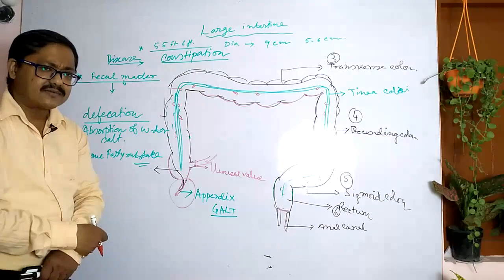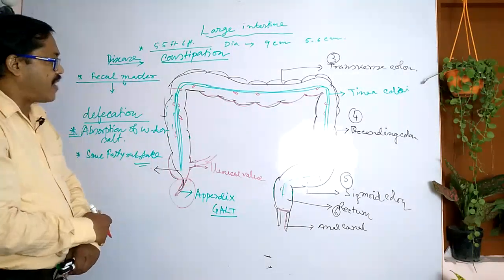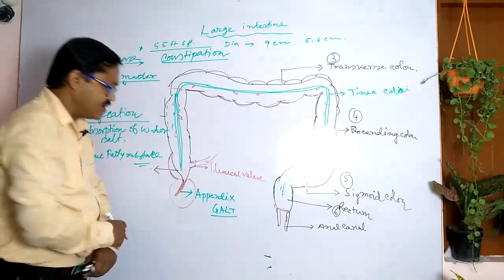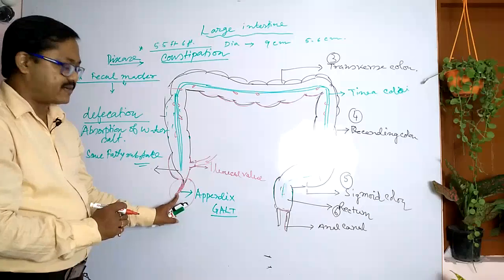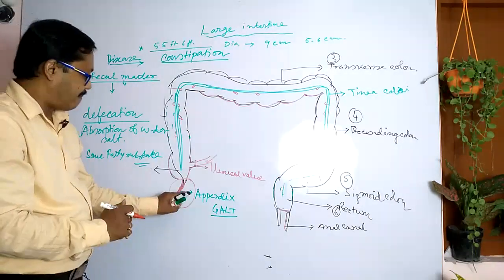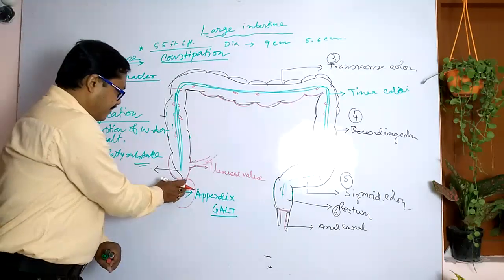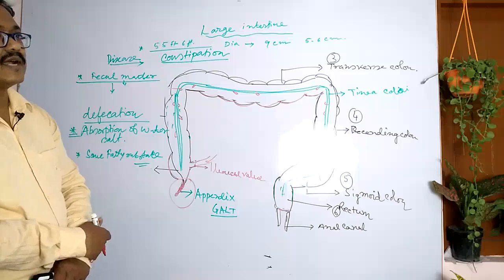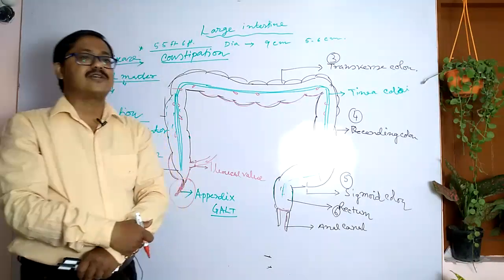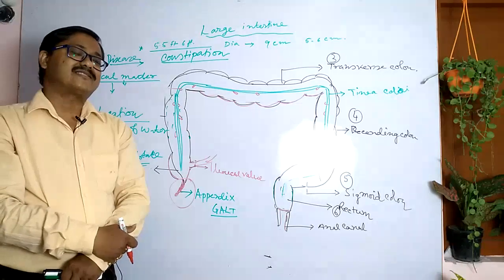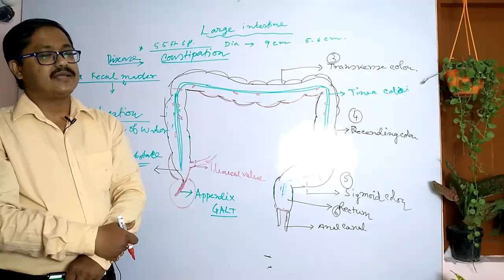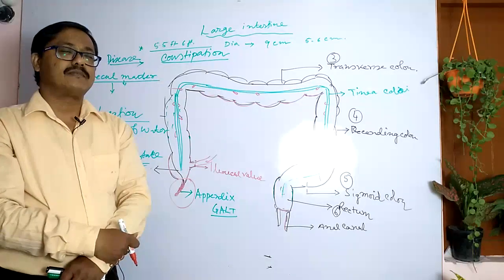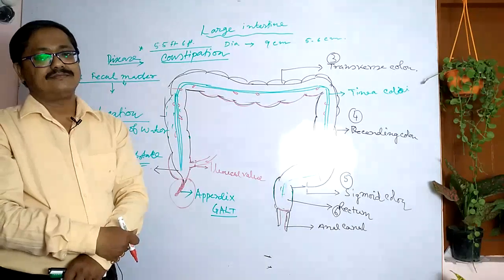Another important disease is appendicitis. The appendix is a lymphoid organ and the largest lymphoid organ in our GI tract, containing a huge amount of lymphoid tissue — it is a gut-associated lymphoid tissue. When the appendix is infected by harmful microbiota, an infection takes place and acute pain develops in the lower abdomen. This concludes our discussion of the salient features and functions of the large intestine. In the next class, we shall discuss the circulatory system, including blood, formed elements, plasma constituents, blood groups, and blood clotting.